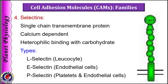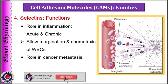Selectins play an important role in both acute and chronic inflammation. They allow margination and chemotaxis of WBCs and help them reach the site of infection. They also play a role in cancer metastasis.